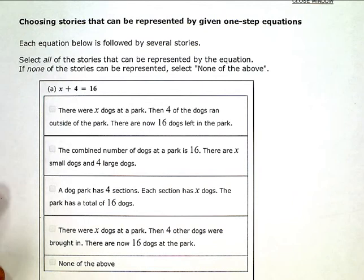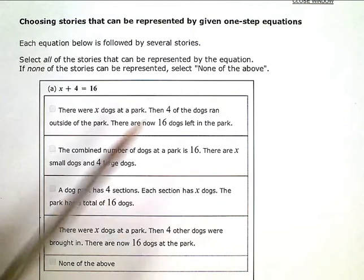Choosing stories that can be represented by given one-step equations. Each equation below is followed by several stories. Select all of the stories that can be represented by the equation. If none of the stories can be represented, then select none of the above.